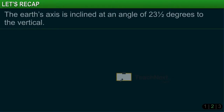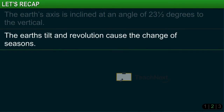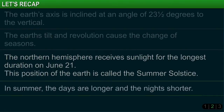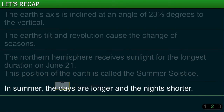The Earth's axis is inclined at an angle of 23 and a half degrees to the vertical. The Earth's tilt and revolution cause the change of seasons. The northern hemisphere receives sunlight for the longest duration on June 21st — this position of the Earth is called the summer solstice. In summer, the days are longer and the nights shorter.